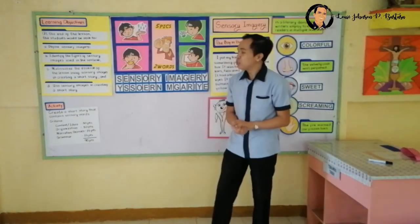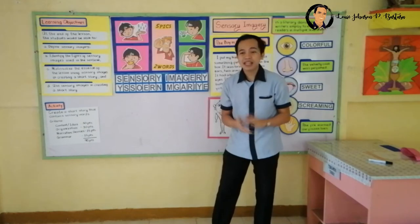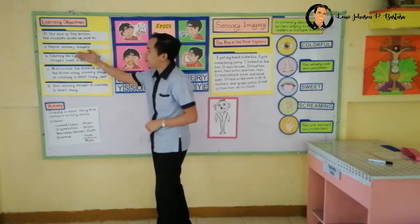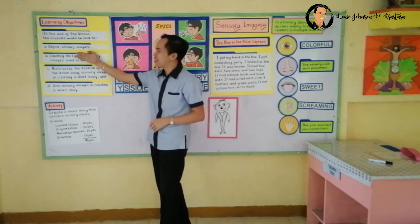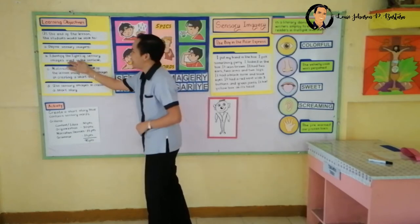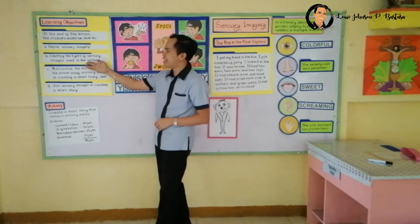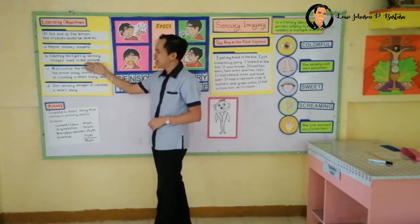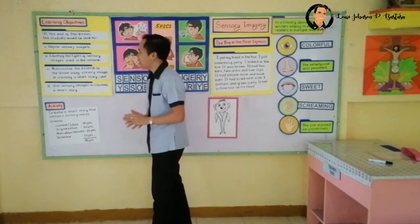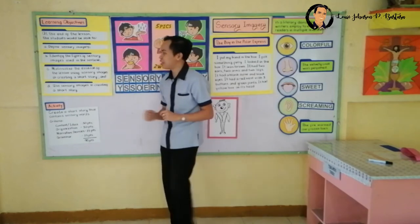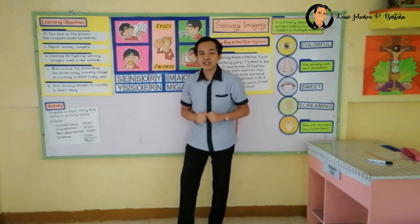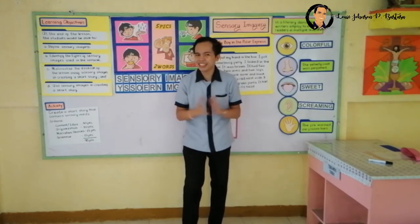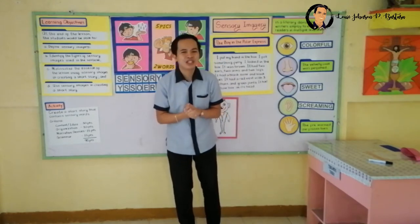We're almost done. Let us go back to our learning objectives and see what we have attained. The first one: we have defined sensory imagery — very good. We have identified the types of sensory images used in our activity. And we have materialized the essence of the lesson by using sensory images in creating a short story, which you have just done. You created a very cute short story!